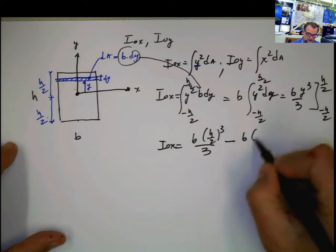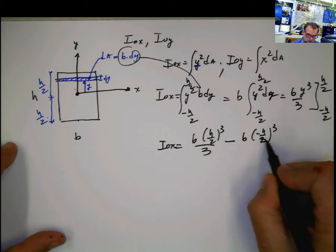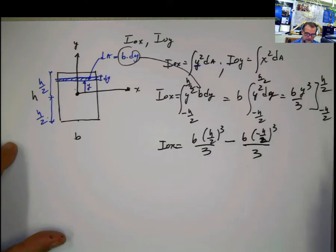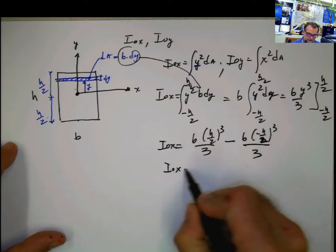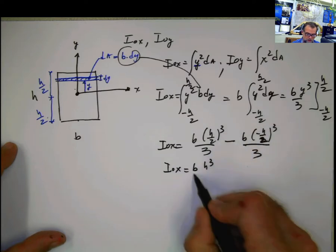now evaluated at this limit, b times negative h divided by 2 to the third, divided by 3. This is this limit. This is this limit. This is b times h to the third divided by 2 to the third is 8. 8 times 3 is 24.